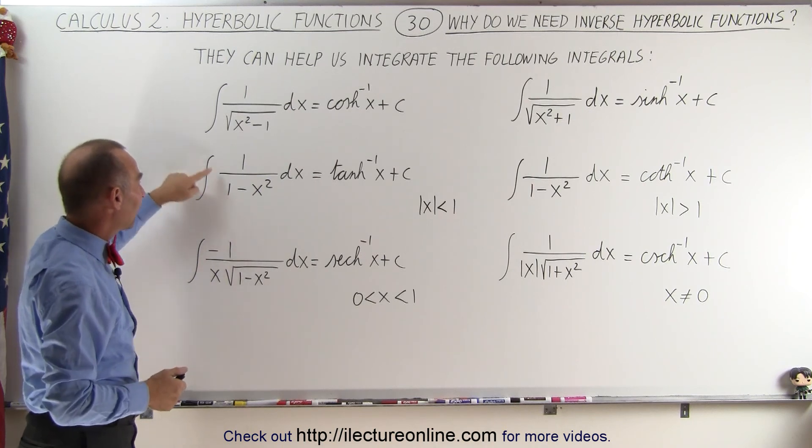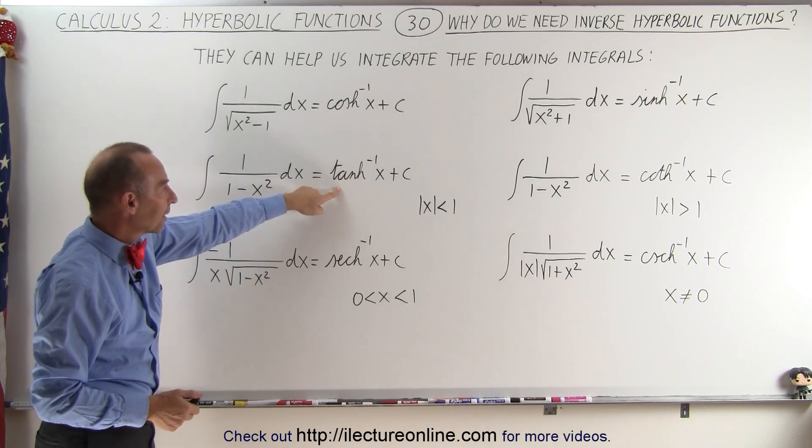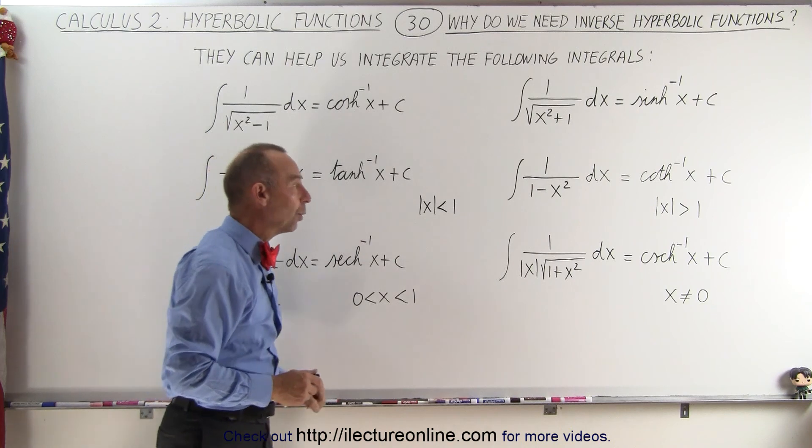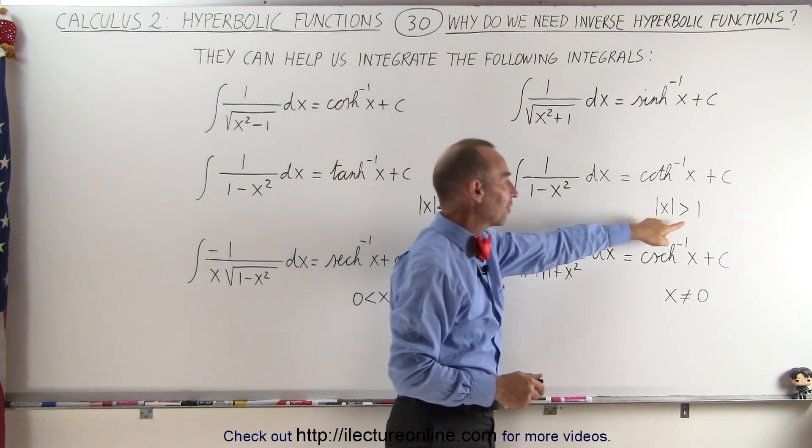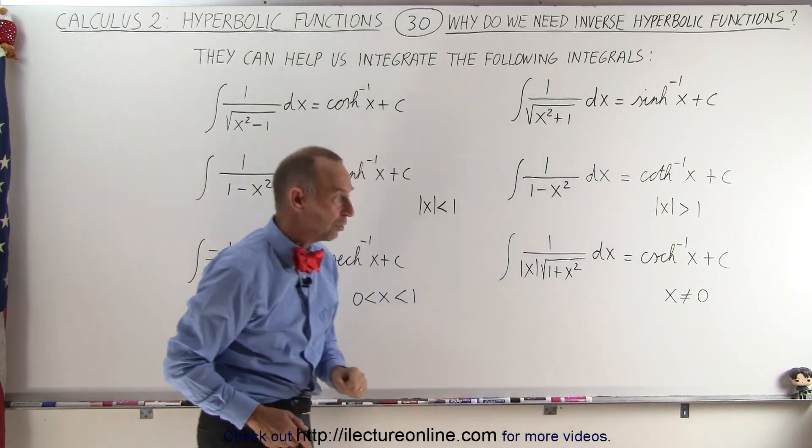Also, notice that we have an integral for 1 over 1 minus x squared that is equal to the inverse hyperbolic tangent, provided that the absolute value of x is smaller than 1. And for the absolute value of x being larger than 1, the very same integral turns into the inverse hyperbolic cotangent.